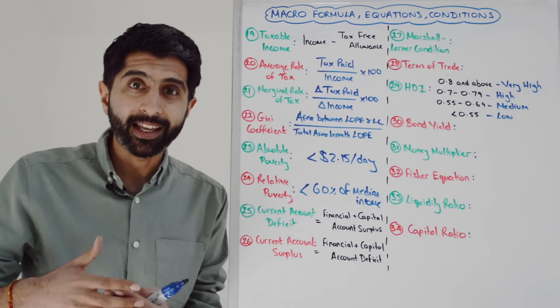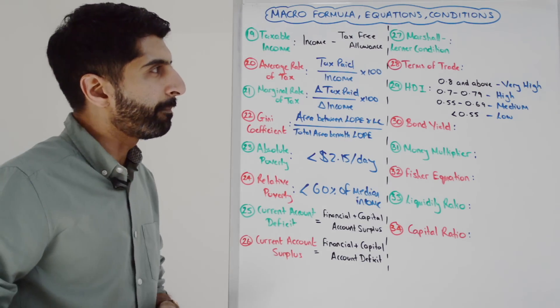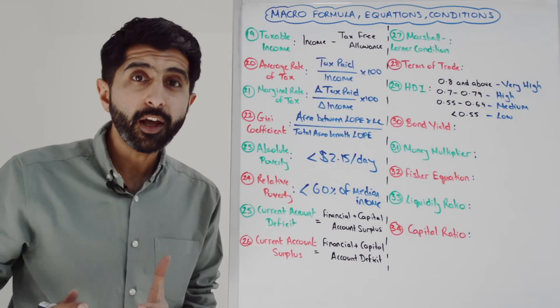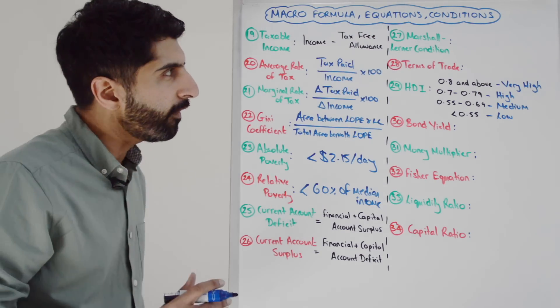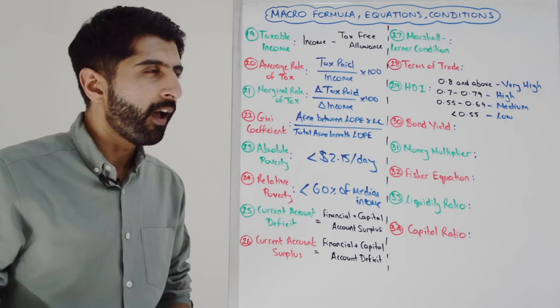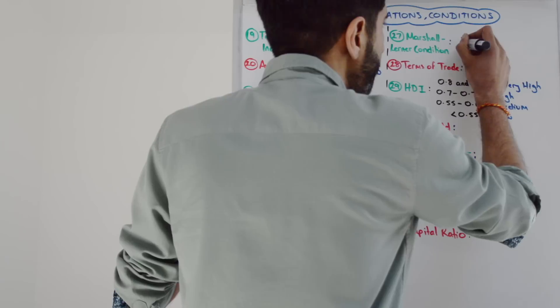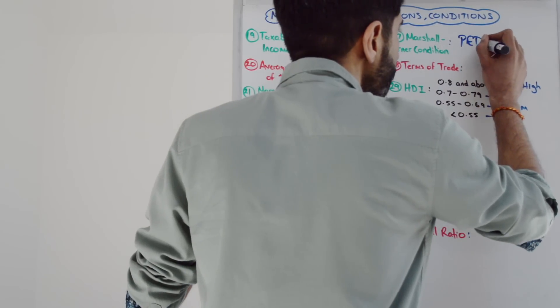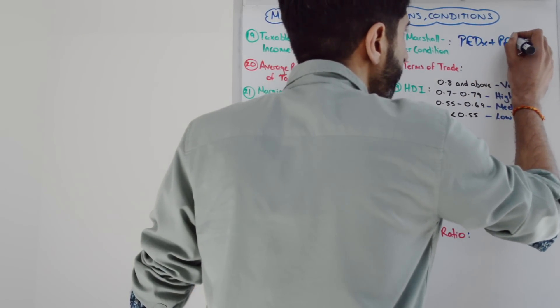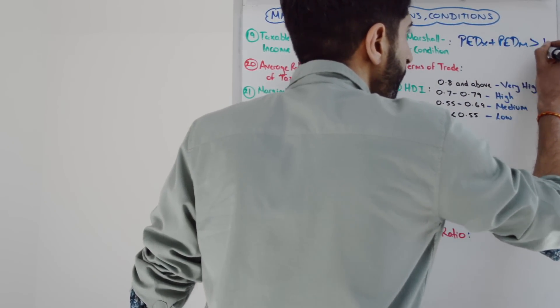The Marshall Lerner condition states that for a currency depreciation to improve a country's current account deficit, the PED of X plus the PED of M must be greater than 1.